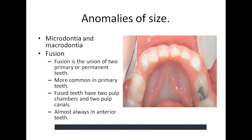Fusion is the union of two primary or permanent teeth. It is more common in primary teeth. Fused teeth have two pulp chambers and two root canals, and are almost always in the anterior teeth. The key to determining fusion is to count the erupted teeth. Because fusion ordinarily occurs between two teeth, there is one less discrete tooth entity than normal — in the primary dentition, children normally have 10 discrete teeth per arch, but a patient with fusion will have only 9.